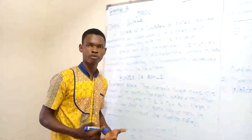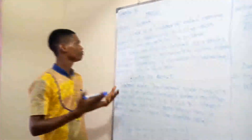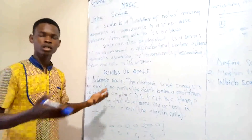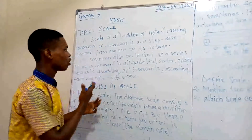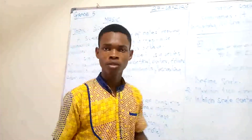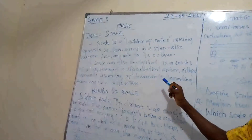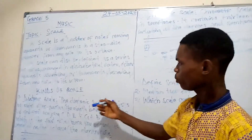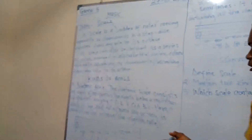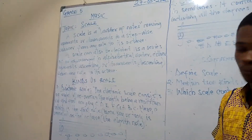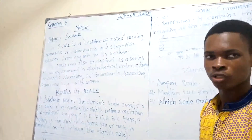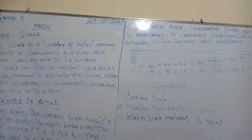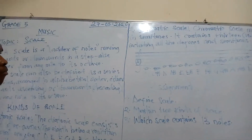To recap: a scale is a ladder of notes moving upwards or downwards in a stepwise manner from any note — it might be A to A, B to B — to its octave. A scale can also be defined as a series of notes arranged in order, either upwards (ascending) or downwards (descending), from any note to its octave. The diatonic scale contains 8 notes, where the 8th note is the same as the first. The chromatic scale consists of 13 notes and moves in semitones throughout.